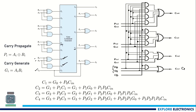Similarly, P1 and G1 are generated using A1, B1. Depending on P1 and G1 we can generate C2. P2 and G2 are generated by using A2, B2, and from those we generate C3. Similarly, by using P3 and G3 we can generate C4. In the generation of C4, C3, C2 and C1, we are not at all using the previous carries — by using the propagate signal and generate signal only, we are going to generate these carries.